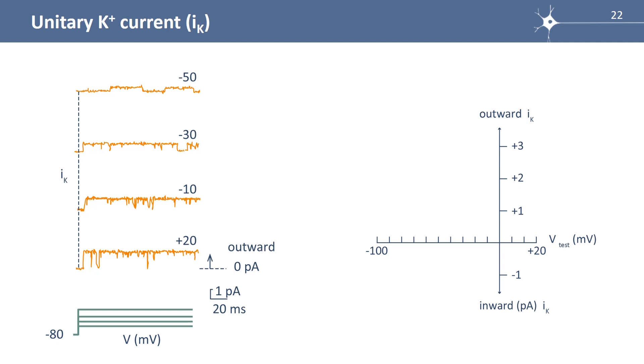Let's have a look now at the IV curve. So here, the same experiment as before. We have steps of increasing amplitude, and we are going to build the curve all together. So here, at minus 50, it's an outward current, so it's a positive current, and around 0.5 picoamps. So plus minus 50 here, around 0.5 picoamps. At minus 30, it's a little less than 1 picoamp.